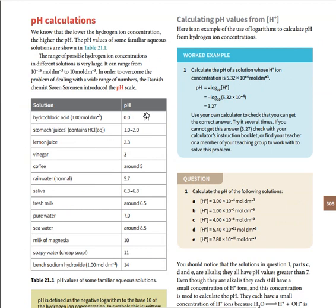Let's see some solutions with different pH values. Hydrochloric acid at 1 mol dm⁻³ has pH 0. Stomach juice is pH 1 to 2. Lemon juice is 2.3, vinegar is 3, coffee is around 5, rainwater is 5.7, saliva is 6.3 to 6.8, fresh milk is around 6.5, pure water is 7.0, seawater is around 8.5, milk of magnesia is 10, and soapy water is 11.